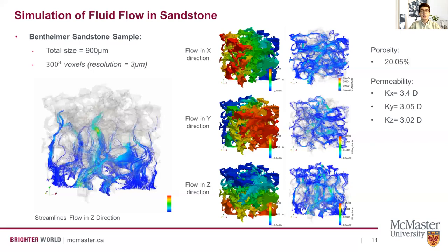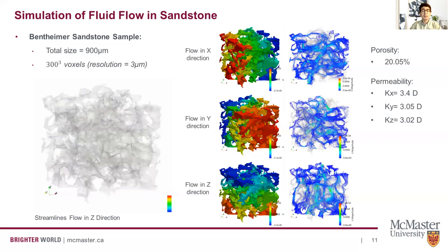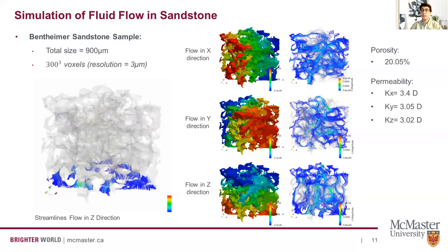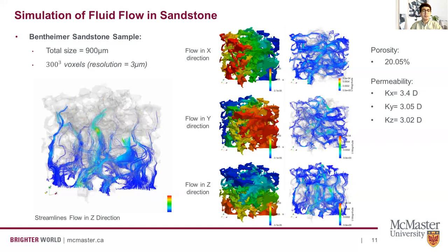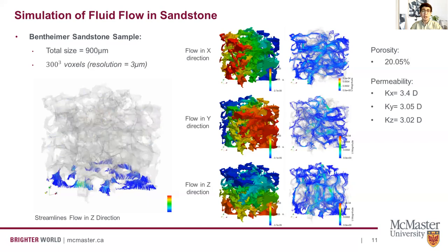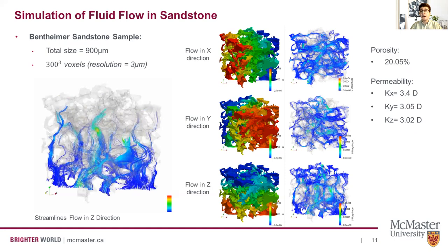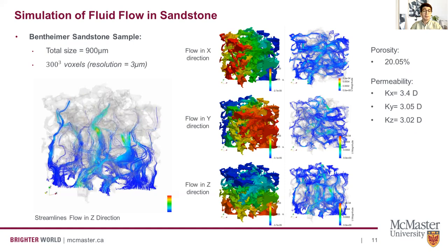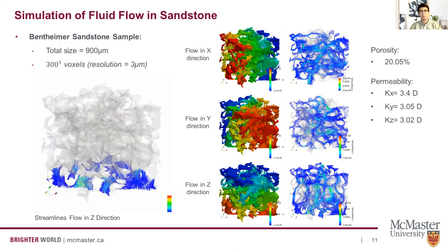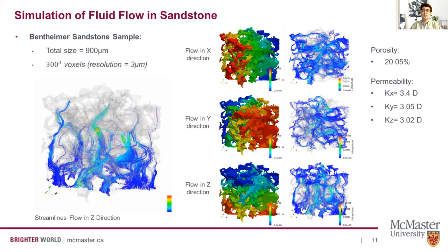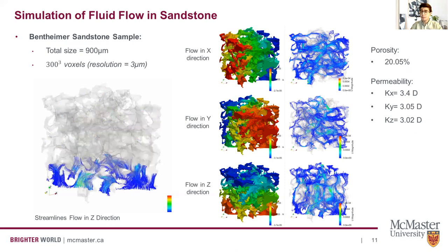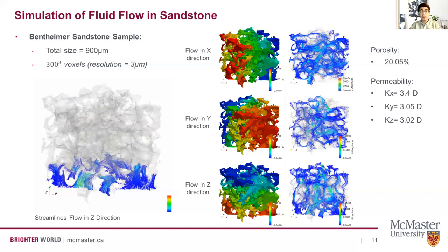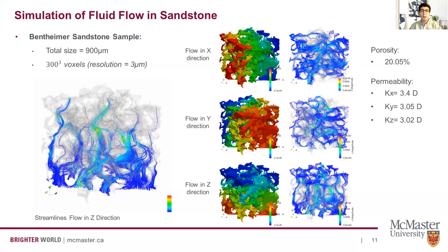Lastly, here are the results for the Berea sandstone sample. The permeability results in three directions are in the order of three Darcy, and the computed permeability values were validated against Bejalikid et al. 2013 and Muljadi et al. 2016 results with around three percent tolerance. We noticed that finer permeability accuracy is dependent on the mesh configuration — the finer the mesh, the more accurate the results.